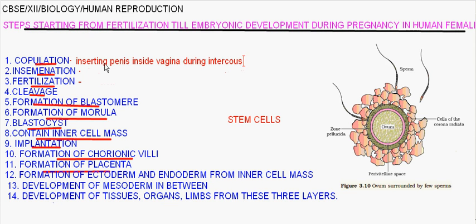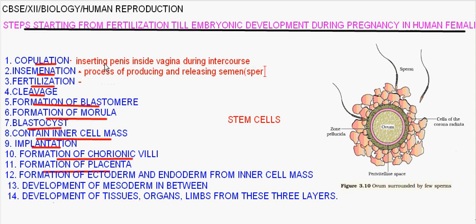Insemination is the process of producing and releasing semen containing sperm. Insemination is the process of releasing semen from the penis into the vagina.